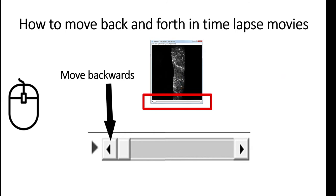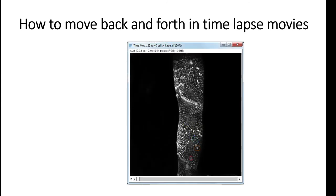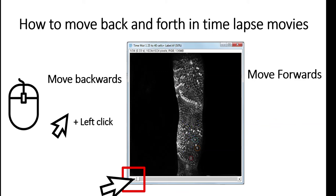Using your mouse, you can left click here and move backwards, or left click here and move forward. If you left click here on this one, you can play the movie. For example, using your mouse, if you want to move backwards you click here, left click, and the movie will start going backwards.